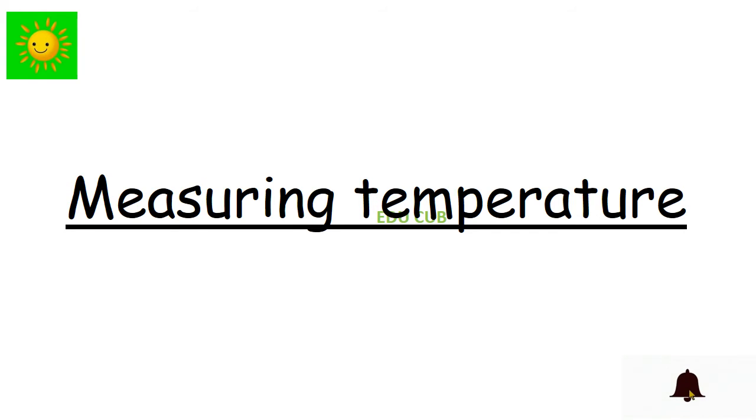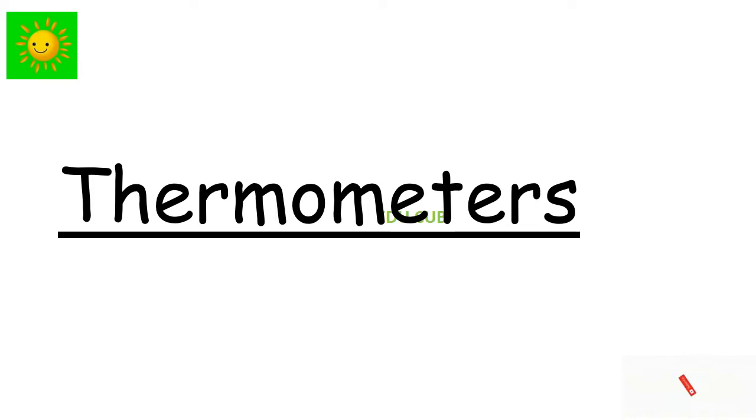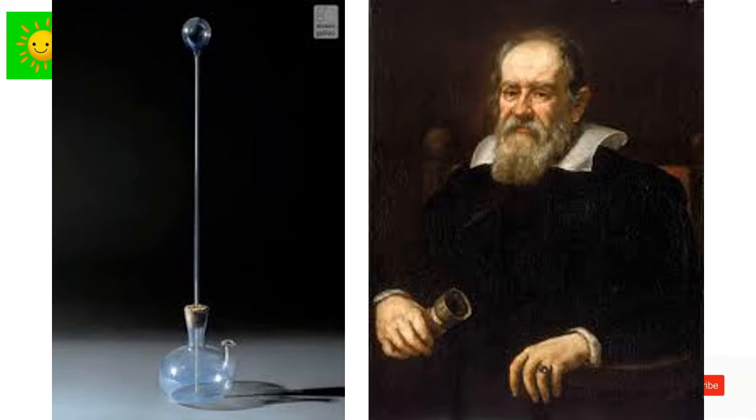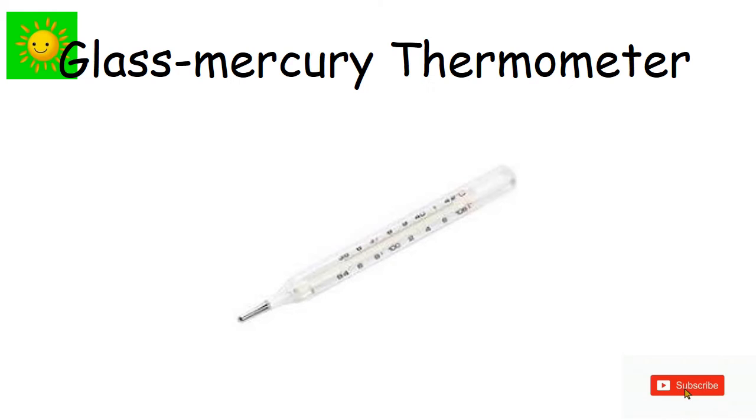Thermometers. The device employed to measure temperature is known as a thermometer. In the first figure you can see the world's first thermometer and the second picture goes to Galileo Galilei who invented the first thermometer. Various types of thermometers are used at present. We will only be focusing on the glass mercury thermometer and glass alcohol thermometer in this chapter.